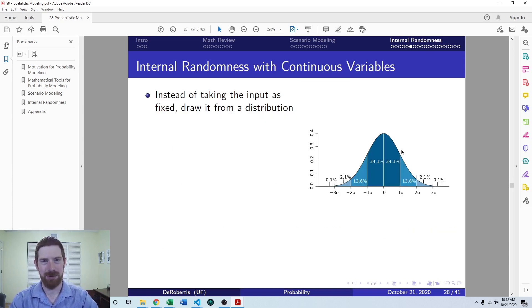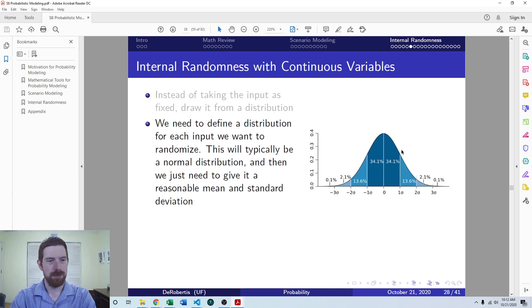And then looking at how we would implement internal randomness with continuous variables. So again, whether it's discrete or continuous, you're going to be drawing that value from a distribution. Just here with continuous, that distribution is defined by a function or a curve. So then for whatever input you're thinking about, you need to determine which distribution makes the most sense for your input. And if you're not sure, it will be the right choice. And most of the cases for your inputs, just use the normal distribution.